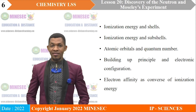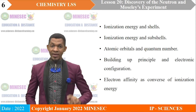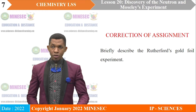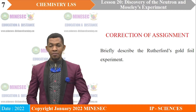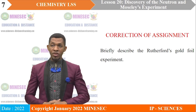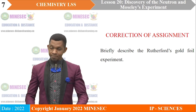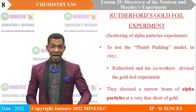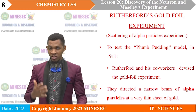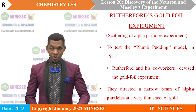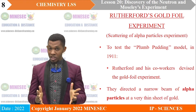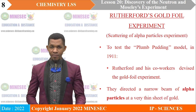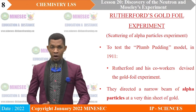Before beginning today's lesson, I would like us to correct the assignment we had at the end of lesson 19. Briefly describe the Rutherford gold foil experiment. The Rutherford gold foil experiment is also known as the scattering of alpha particles experiment, because in this experiment the alpha particles were scattered by the gold foil. After J.J. Thomson came up with the plum pudding model of the atom,